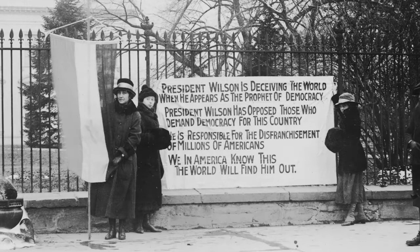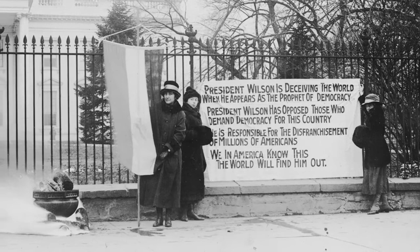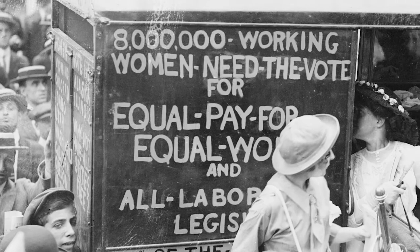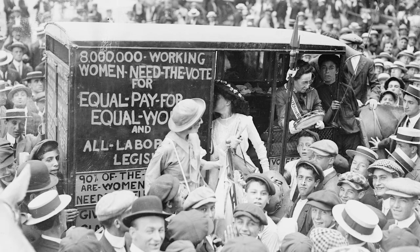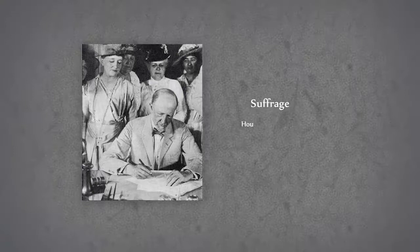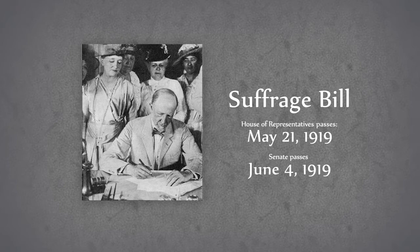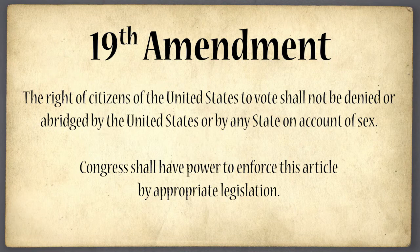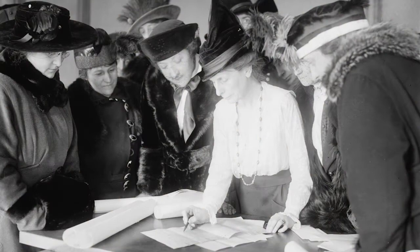In September 1918, the House of Representatives passed legislation; however, the Senate failed at passing an amendment. Members of the National Women's Party continued extreme tactics — staging demonstrations, climbing statues, chaining themselves to fences, and burning watch fires in front of the White House. On May 21st, 1919, the House of Representatives passed the amendment. Then, on June 4th, the amendment was finally passed in the Senate. After years of struggle, the 19th Amendment, ratified on August 18, 1920, gave women the right to vote.